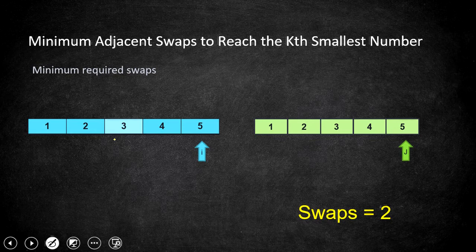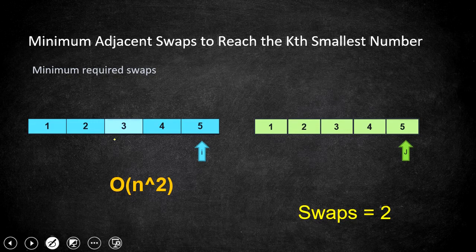Overall this algorithm runs in O(n²) time, since finding the next permutation takes O(n) and the second half — counting swaps — also takes O(n), and we repeat the permutation step k times.